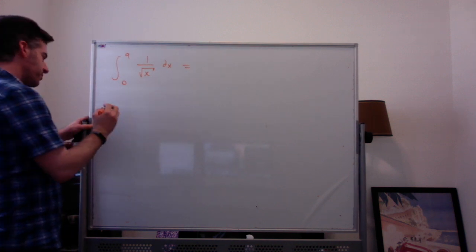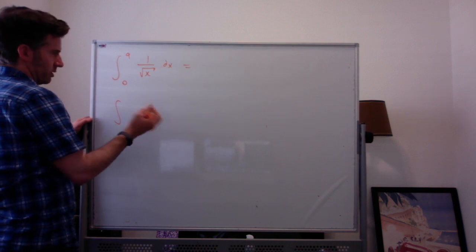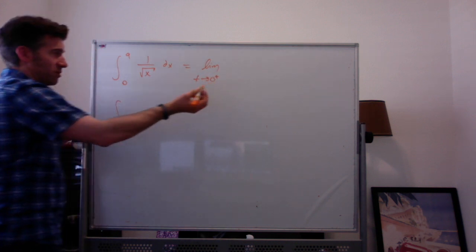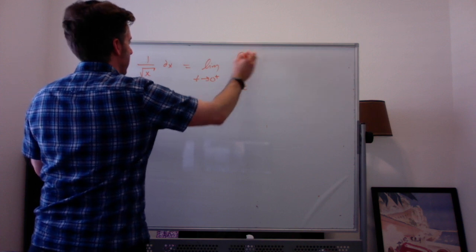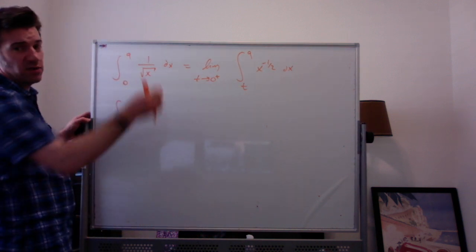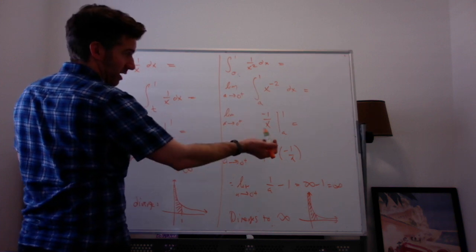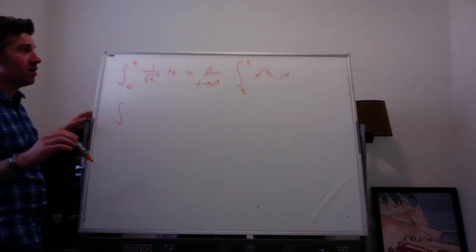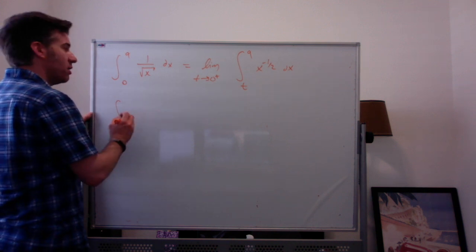So we look at this. We have the limit as t goes to 0 from the right — since we're between 0 and 9 — of the integral from t to 9 of x to the negative one half dx. The key difference here: when we integrated x to the negative 2, we still got x to a negative power — x to the negative 1, which kept an x in the denominator. When we integrate x to the negative one half, we're going to get x to a positive power, which will be in the numerator, and it won't be a problem when we plug in 0.